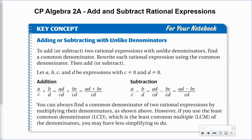In this video, you're going to learn how to add rational expressions with unlike denominators. To do this properly, we will need to find a common denominator, just like we did in the opener. You can always find a common denominator by simply multiplying the two denominators together, but that can make for some messy simplifying in the end. So we will find the least common multiple and use that as our common denominator.